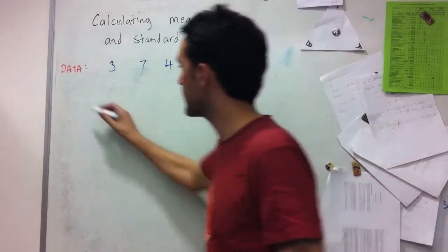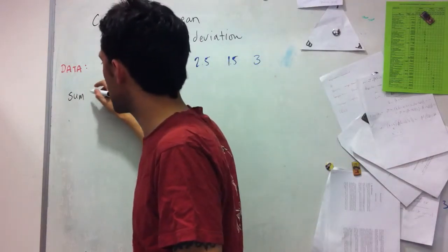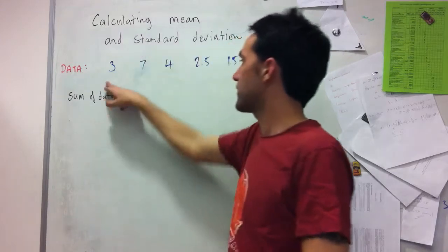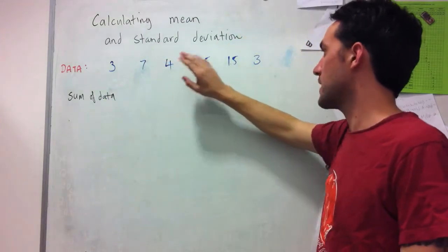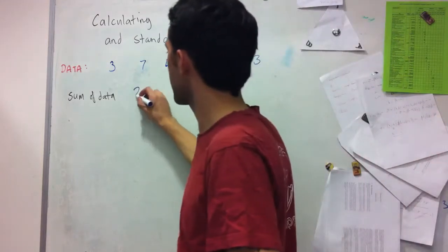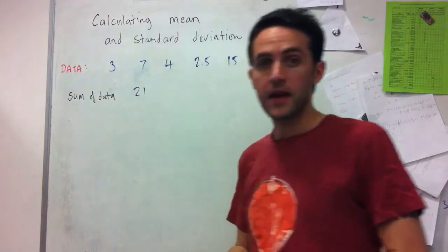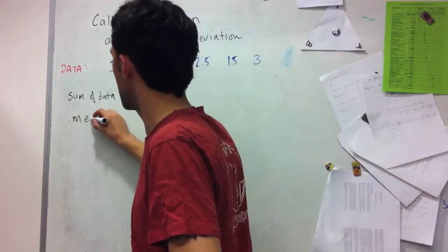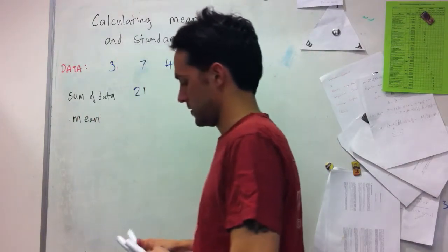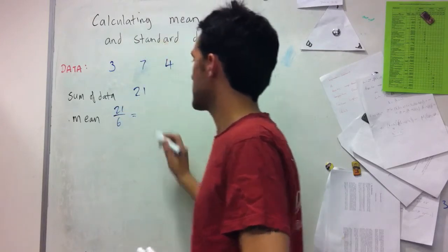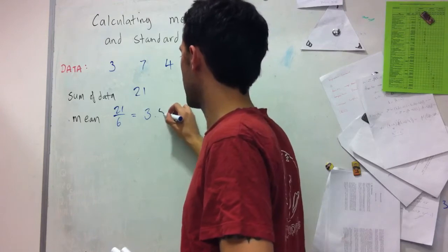So in this case we take the sum of all these data and that gives me 3 plus 7 plus 4 is 14, 16.5, 18, 21. And then I divide this by 6 to come up with my mean. So it's going to be 21 divided by 6, which gives me 3.5.